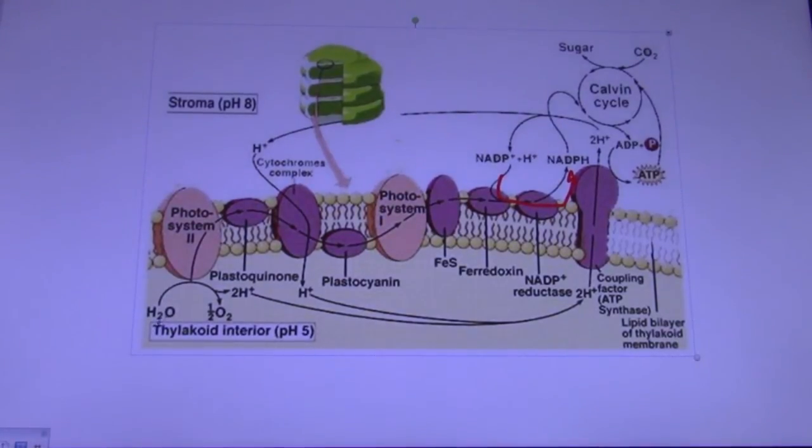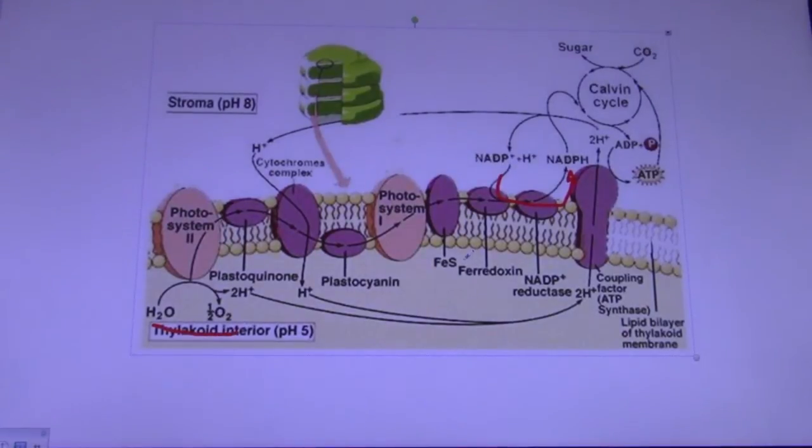Photosystem II is involved in the oxidation of water and provides electrons to replace those that are lost in photosystem I through the action of ferrodoxin.